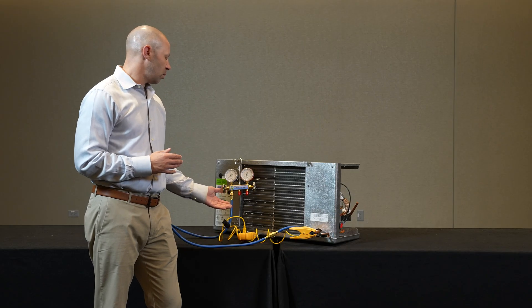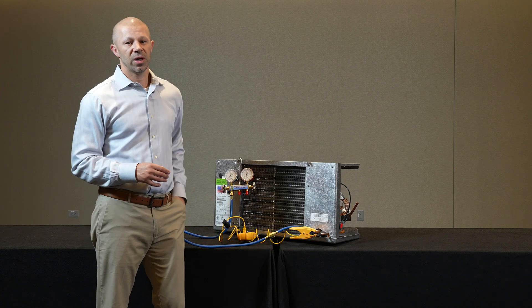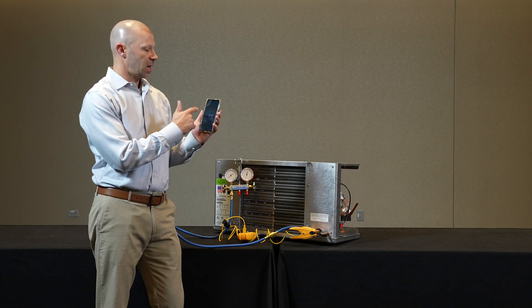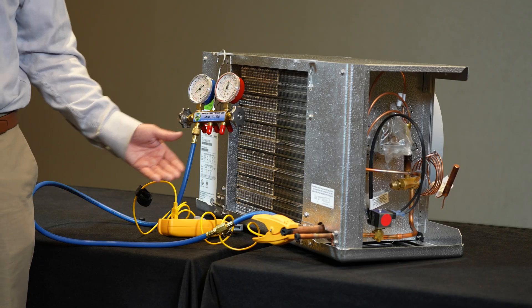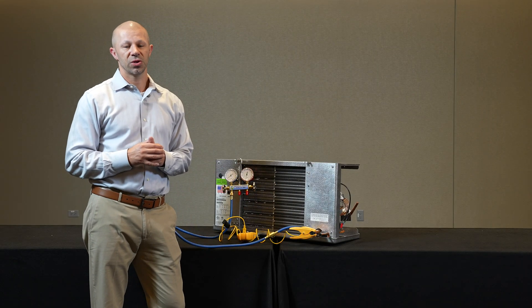When we look at the pressure reading, it will correlate to the boiling point of that refrigerant. That is where we use our PT charts you can find at any wholesaler, as well as apps that are available through National Refrigeration. Once we get the boiling point of that refrigerant, we can then take the temperature, and the delta in that value is your superheat value.